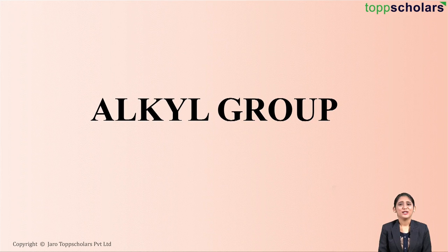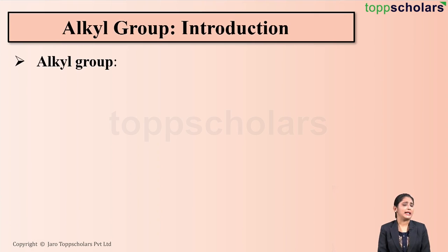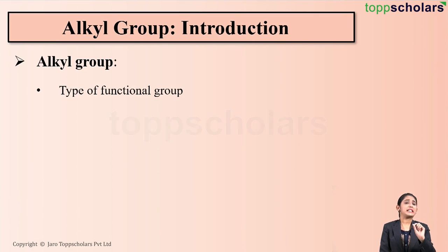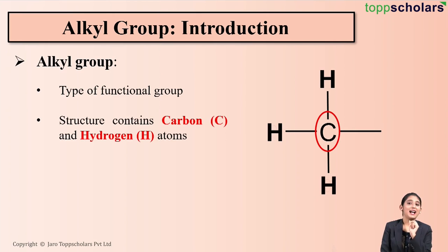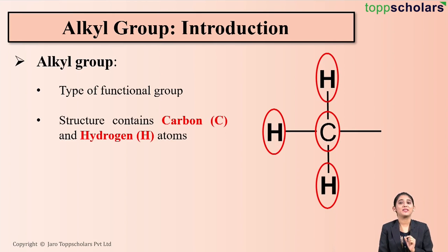Hello dear students, welcome to Top Scholars. Today we will be discussing about alkyl groups. An alkyl group is simply a type of functional group which contains carbon atoms, represented by C, and hydrogen atoms, represented by H.